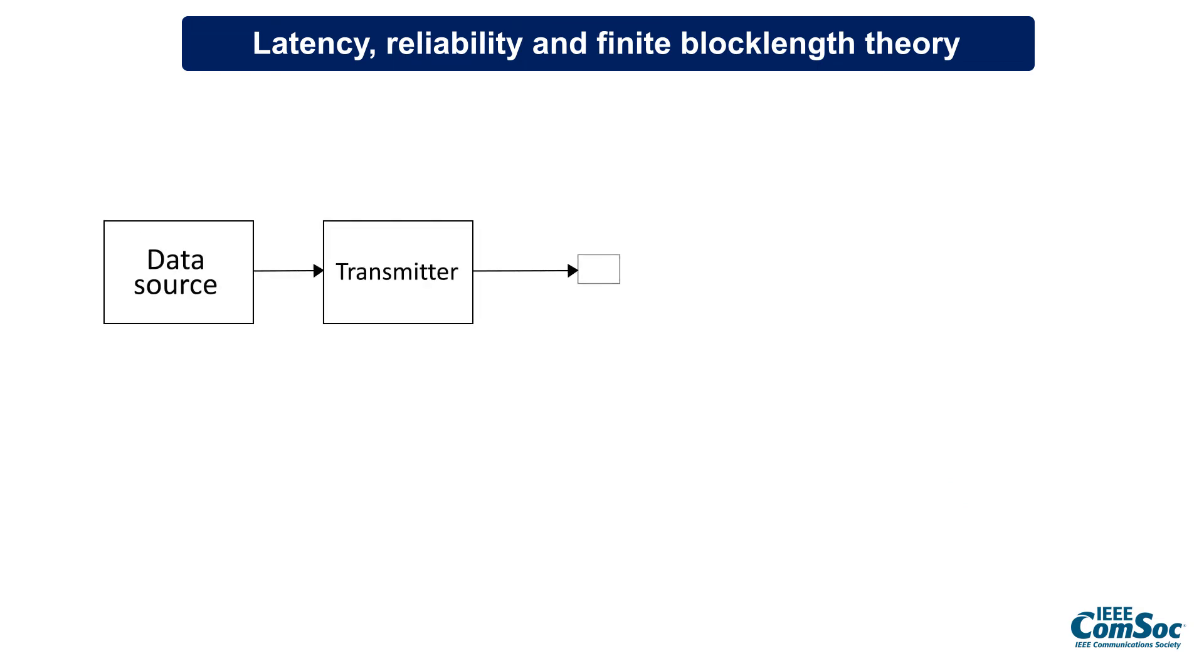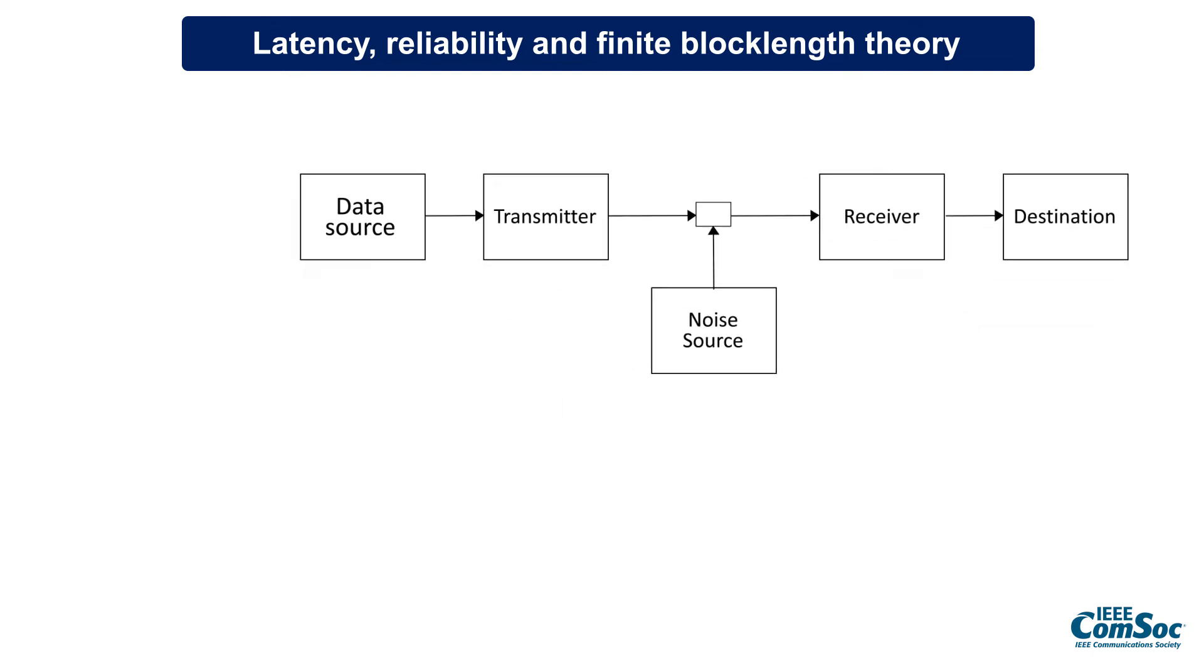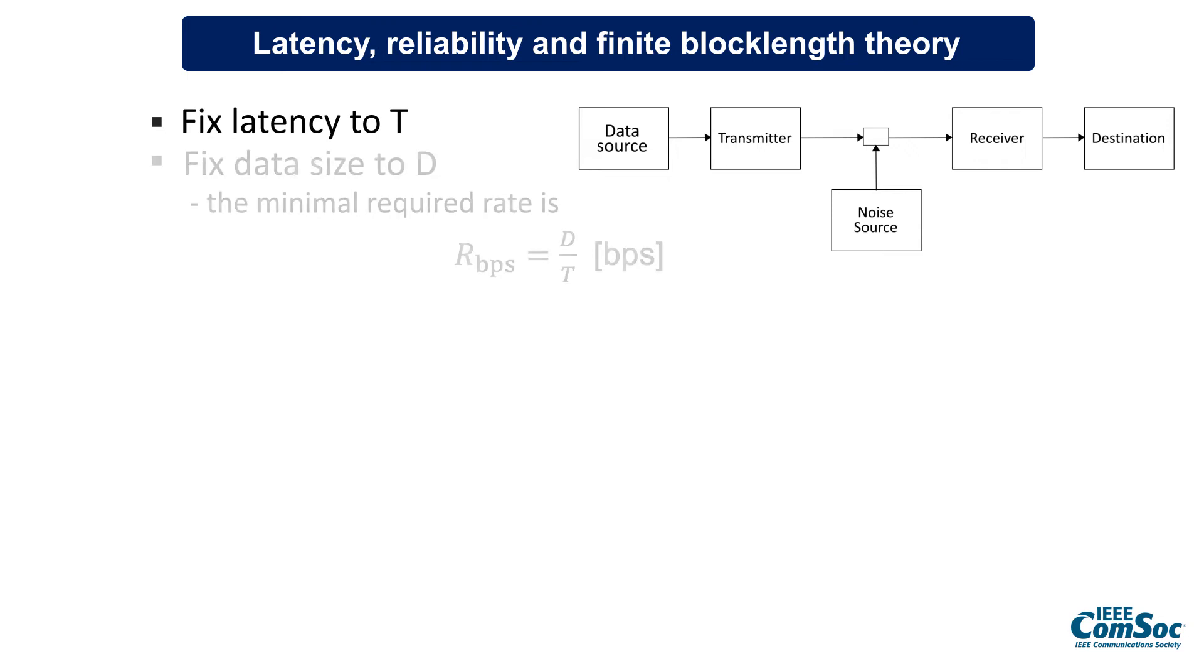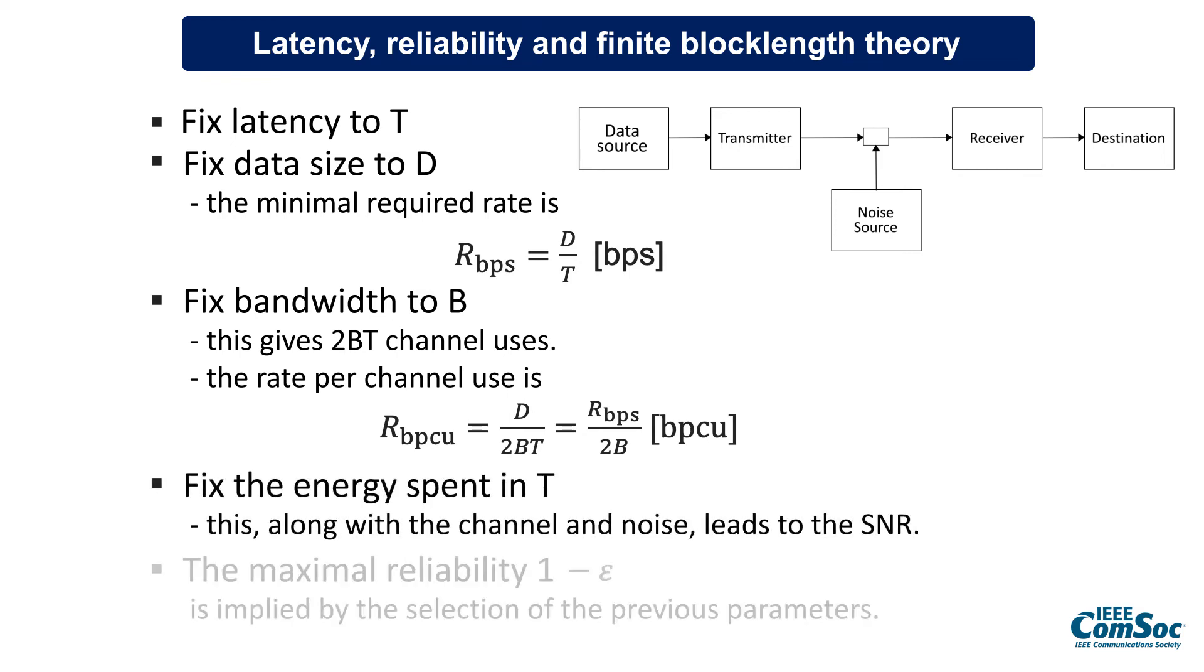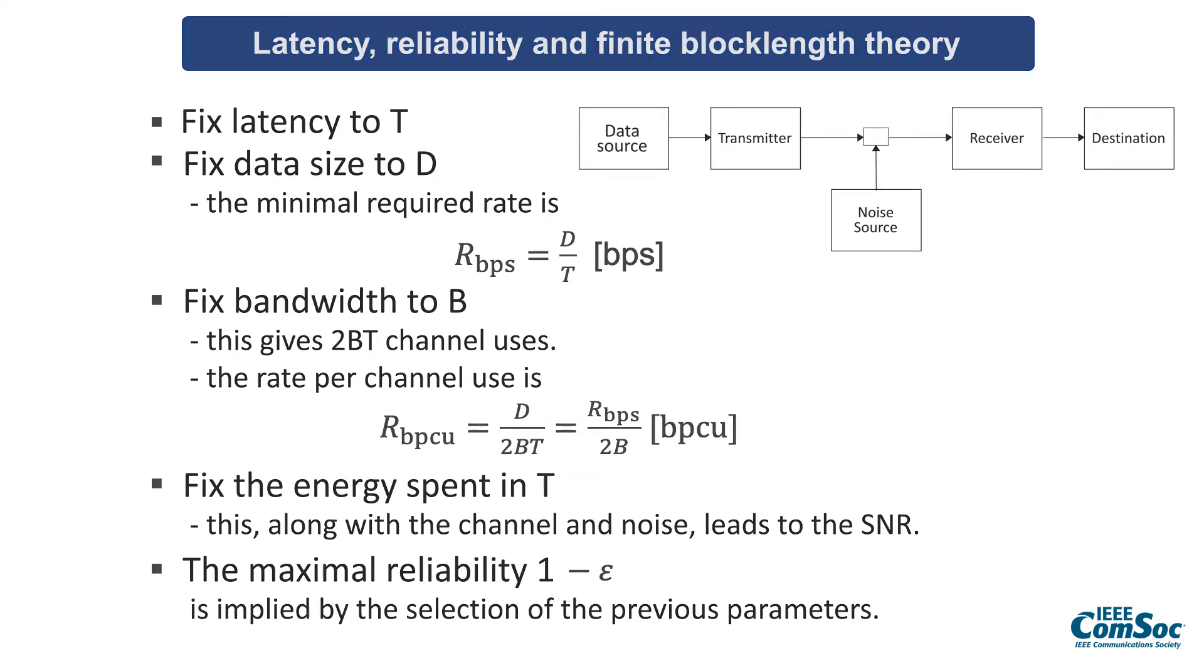We fix the latency to T, fix the data size to D, which determines the minimal data rate in bits per second that the system should support. Then we fix the bandwidth to B, which determines the data rate in bits per symbol. Then we fix the energy spent in T, which fixes the SNR at which the signal is received. Based on all this, using finite block length theory, we can find the maximum reliability that can be achieved for a given transmission.